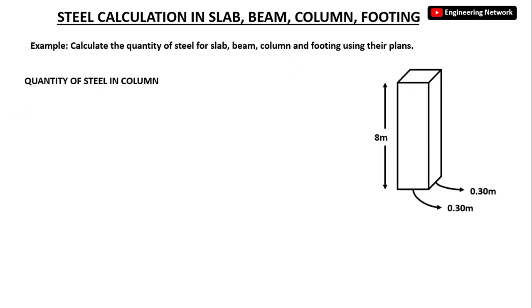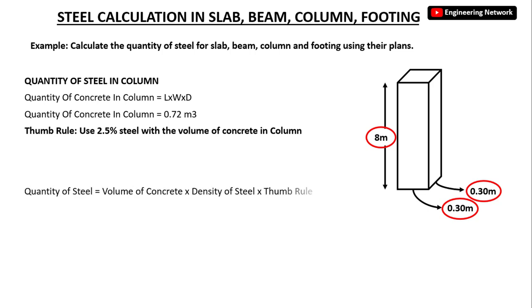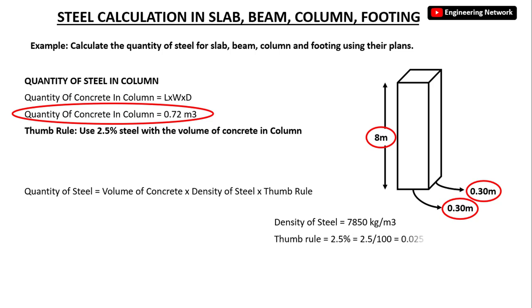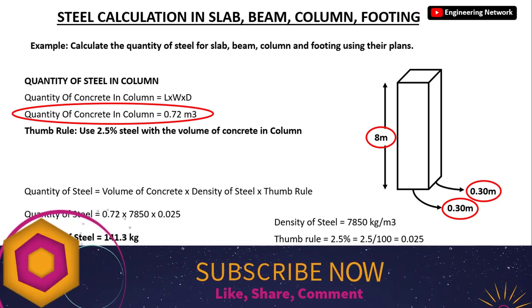Next is the Column. The volume of concrete in Column = length × width × depth = 8 × 0.30 × 0.30 = 0.72 cubic meters. The Thumb Rule for Column states: use 2.5 percent steel with the volume of concrete. So the quantity of steel = volume of concrete × density of steel × thumb rule = 0.72 × 7850 × 0.025 = 141.3 kg.